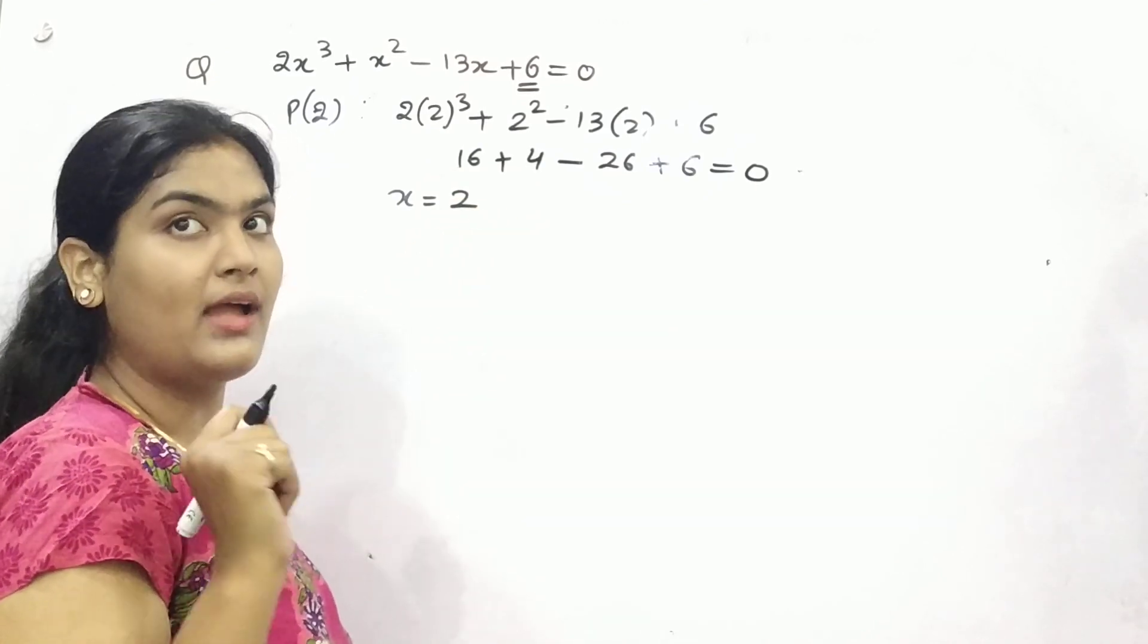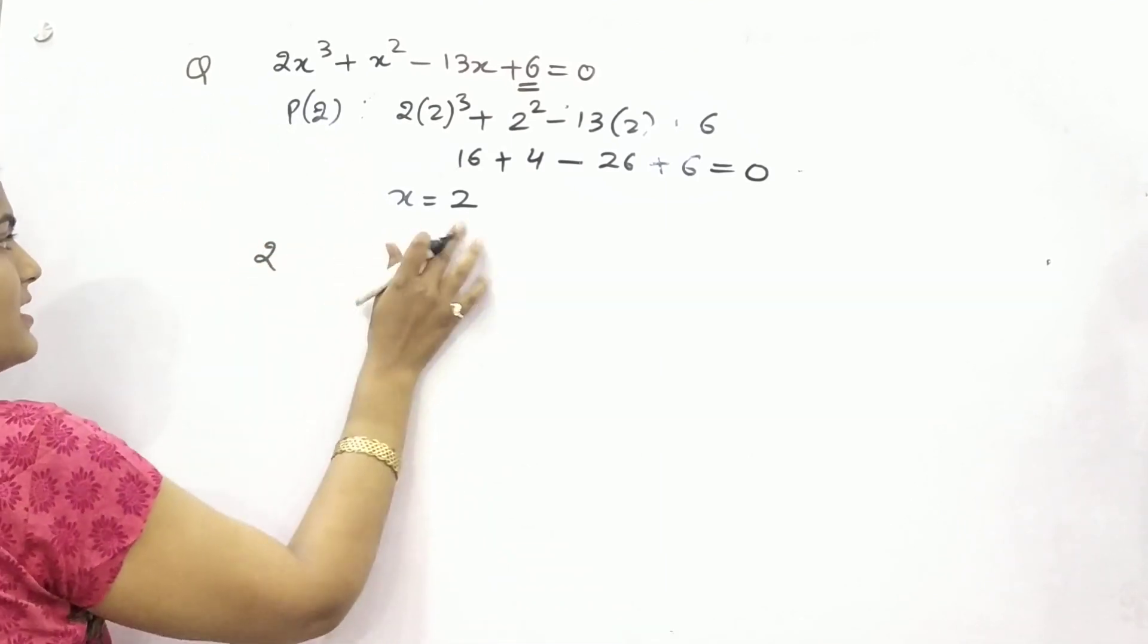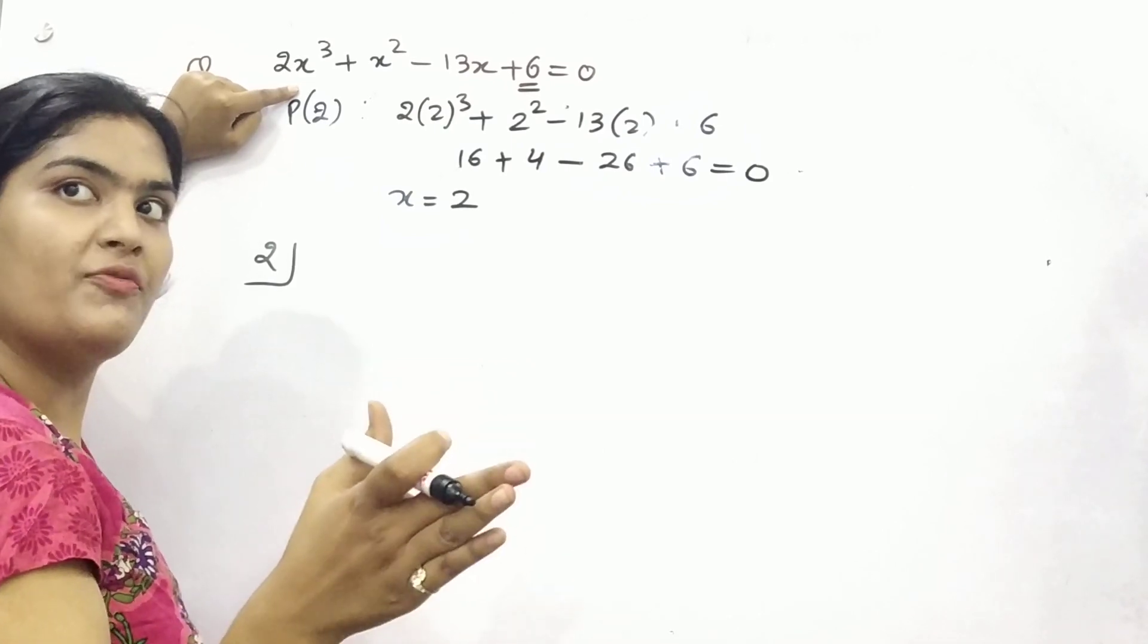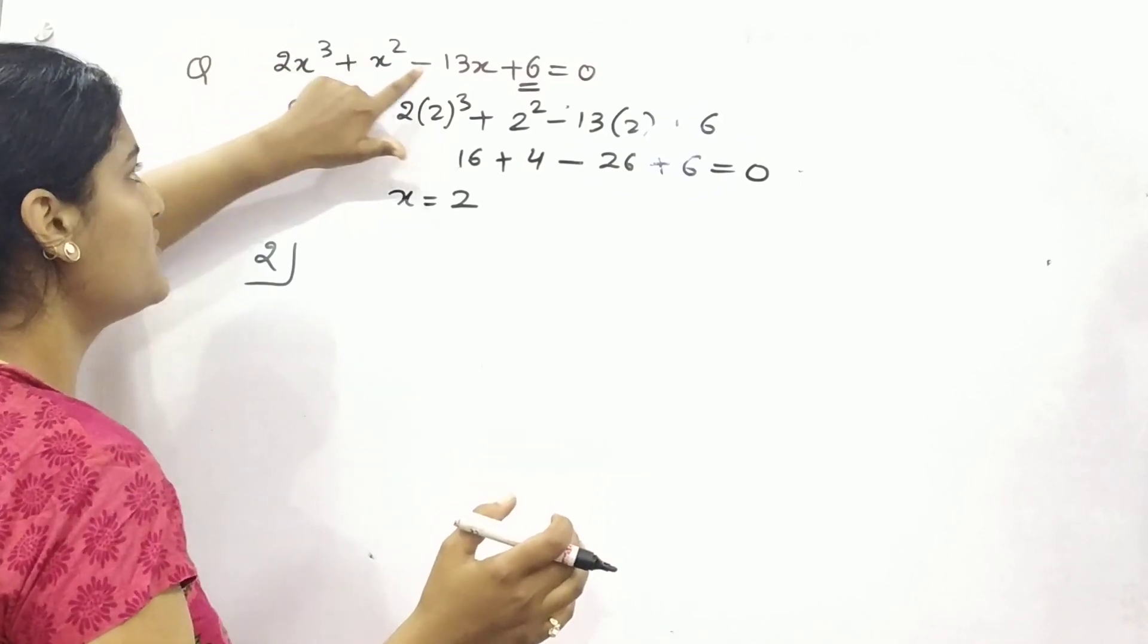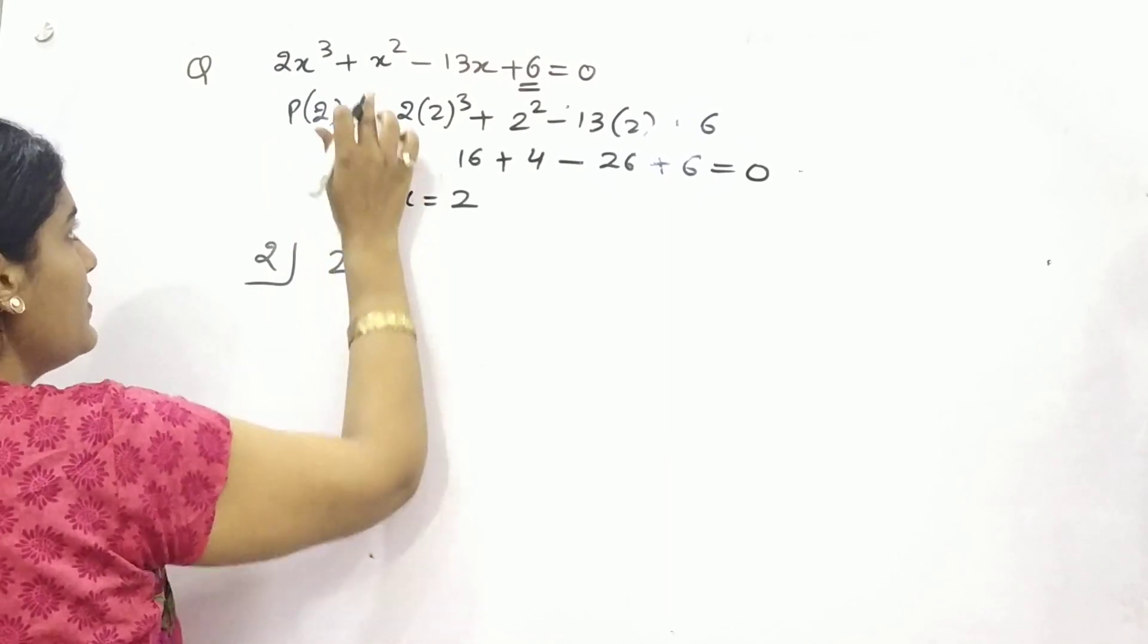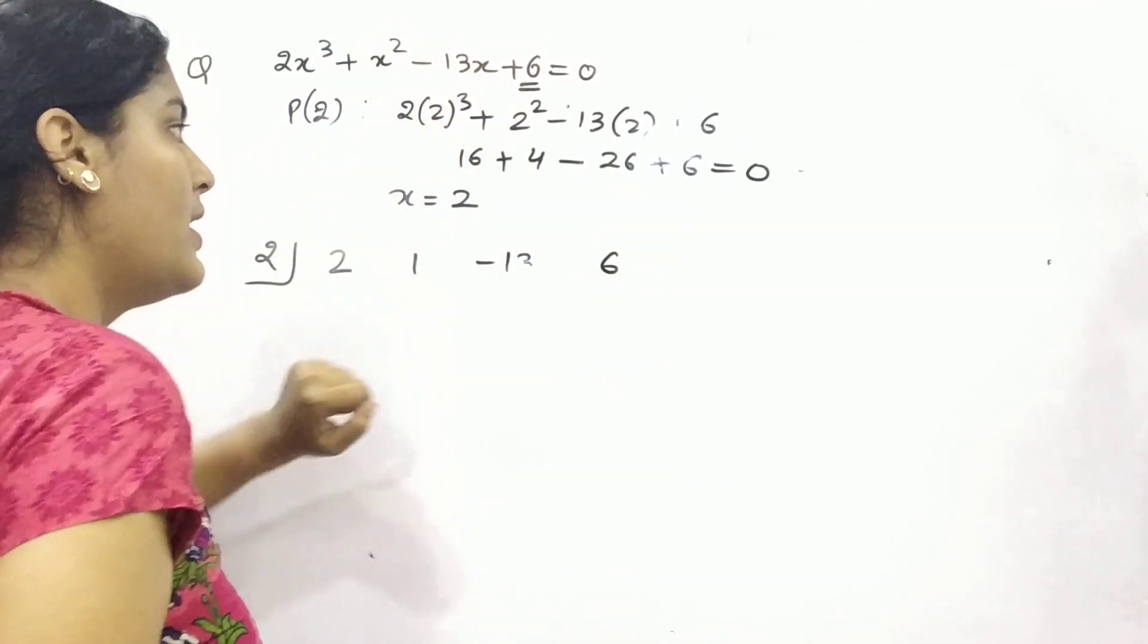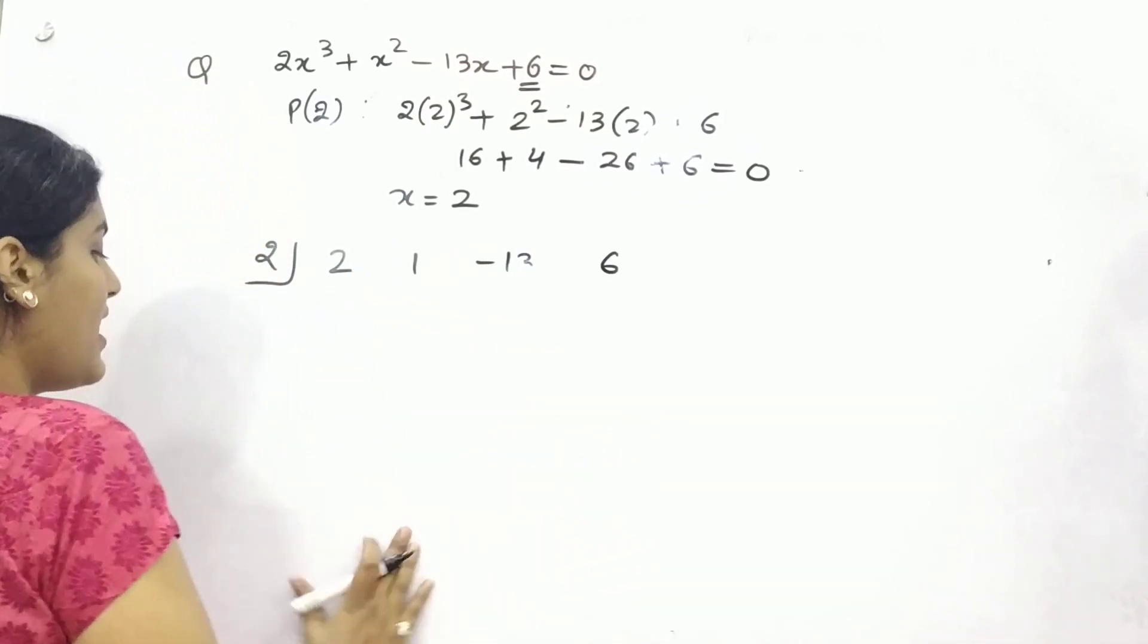Now let's begin synthetic division method. What you need to do in that? You have to write this number here and check whether all the coefficients are in decreasing order of their degrees of the variables: x³, x², x¹ and constant. So only the coefficients you need to write down with their respective signs. Let's say if x would not be there, then you can take 0x. Don't skip that completely.